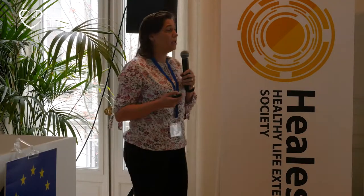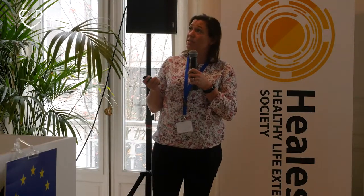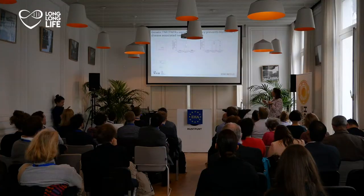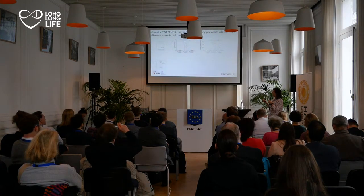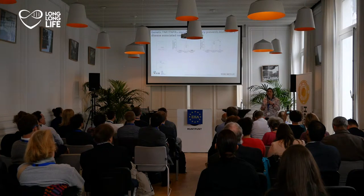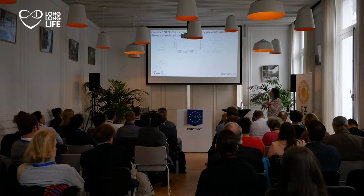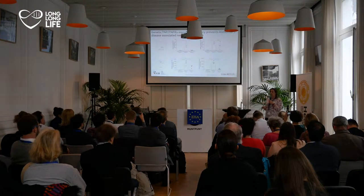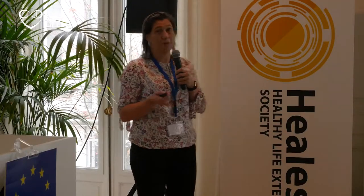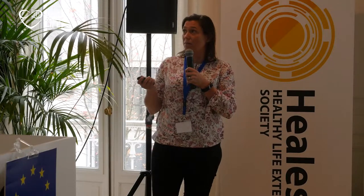We then used the same models to genetically deplete TNF receptor 1, thereby blocking TNF/TNF-R1 signaling. In the genetic Alzheimer's model, there is an increase in inflammation in diseased mice, but this is completely absent when TNF receptor 1 is not expressed. In the amyloid-beta oligomer model, the inflammation increase is also partially blocked in the absence of TNF-R1 signaling.